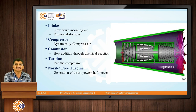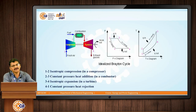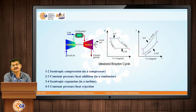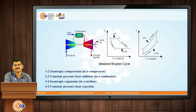This is the basic diagram of the gas turbine power plant you can see. This is the Brayton cycle on which the gas turbine power plant is working. You can see here the basic components: the compressor, combustion chamber, and turbine. It is an open cycle, working on the Brayton cycle.